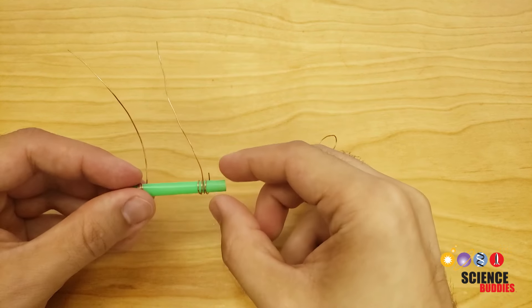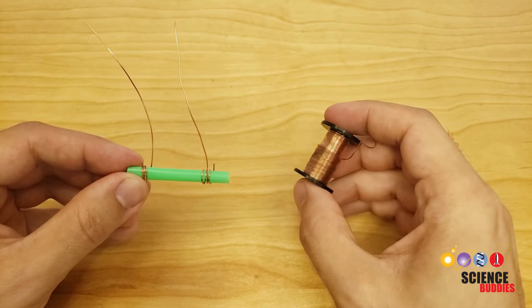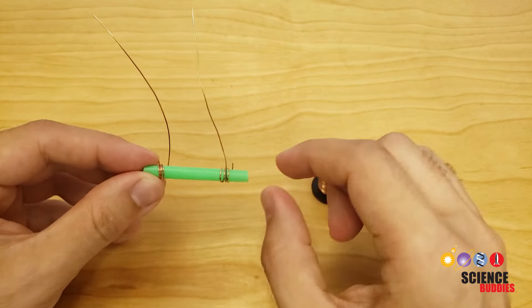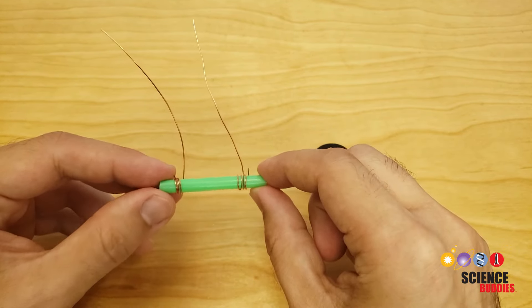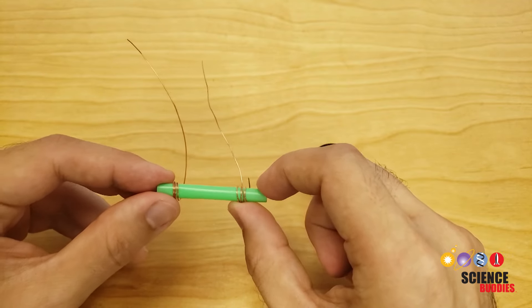To start the project, you will need to make your conductance sensor. Your electrolyte challenge kit comes with a small spool of uninsulated copper wire. To make the sensor, you cut a short piece of straw, cut two pieces of the wire, and then wrap each piece around each end of the straw.